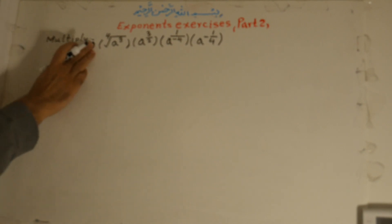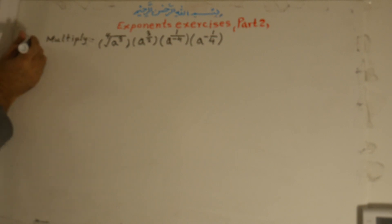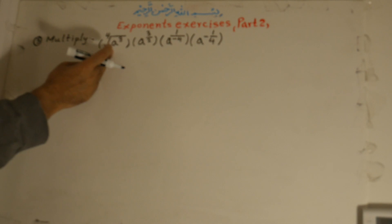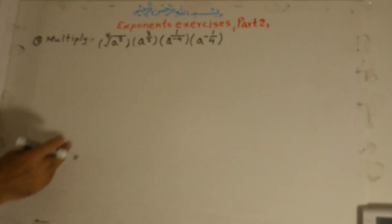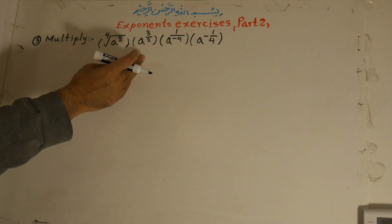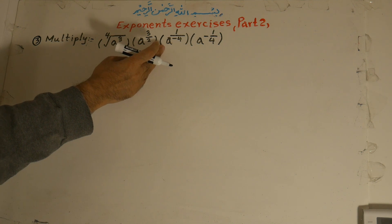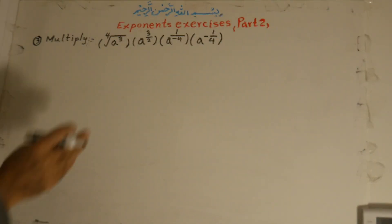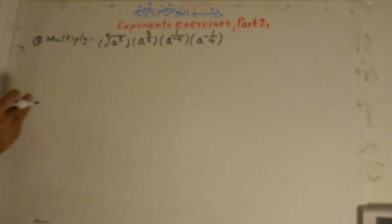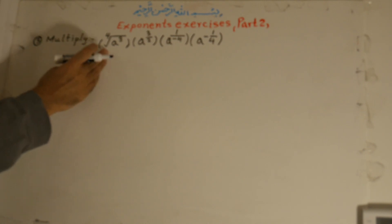Exercise number 3: multiply these terms. A to the power of 3, fourth root, times a to the power of 3 over 2, multiplied by a to the power of 1 over negative 4, and multiply by a to the power of minus 1 over 4.